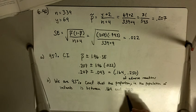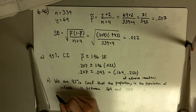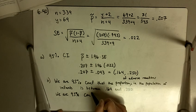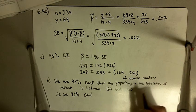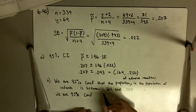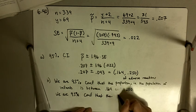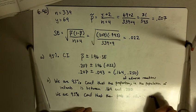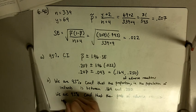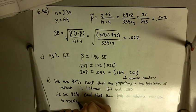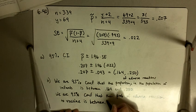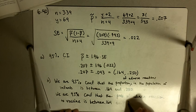Because in this case, proportion in the population is practically, it is basically a probability. Adverse reaction to the vaccine is between 0.164 and 0.250.